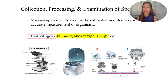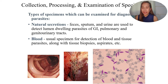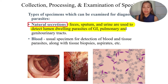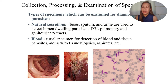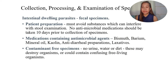Types of specimens for diagnosis include natural secretions such as feces, sputum, and urine, which detect lumen-dwelling parasites of the gastrointestinal, pulmonary, and genitourinary tracts. Blood is the usual specimen for detection of blood and tissue parasites. Biopsies and aspirates can also be used. For intestinal-dwelling parasites, fecal specimens are the primary collection method.